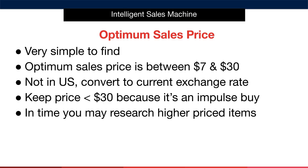If the price is higher than $30, it can potentially result in buyer's remorse, which will only result in refunds and customer service issues that you really want to avoid. The fewer buying barriers in the way of a customer making a purchase, the higher the conversion rate. A higher conversion rate helps your item rank in the Amazon search engines effectively, because Amazon wants to make more sales. If your item converts well, it makes them money, and they want to give you more opportunities to sell more, improving your visibility on the platform.